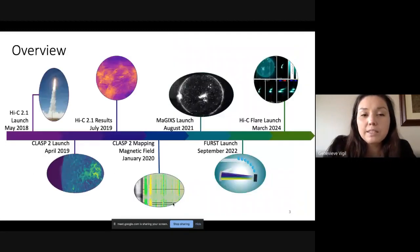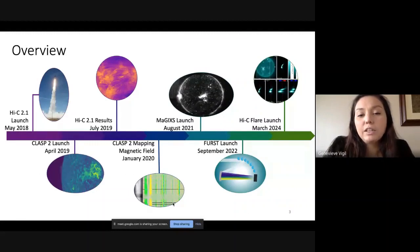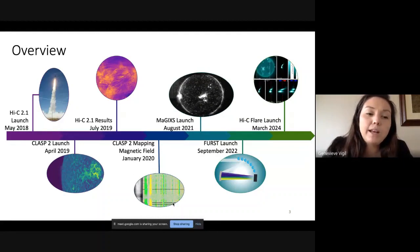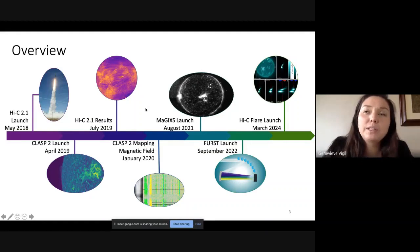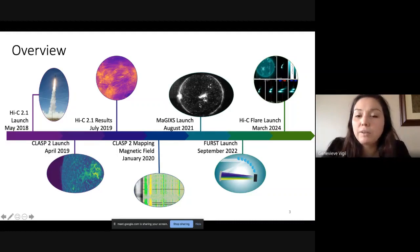To kind of organize my talk, I wanted to just give a little bit of a timeline of some of the recent missions. First, I'll talk about Hi-C and CLASP, which were launched in 2018 and 2019, respectively, and go over some of the first and preliminary results. Then I'll shift and move towards a status update on our upcoming missions, including MaGIXS, which we hope to launch summer of this year, FIRST the year after that, and then in 2024 we're going to be launching the very exciting Hi-C Flare campaign.